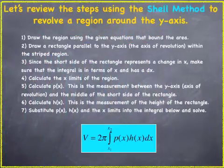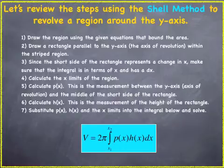So let's just review some of the steps. So in item 1, you want to draw your region using the given equations. Item 2, draw a rectangle parallel to the y-axis or the axis of revolution, whatever that may be. In 3, since the short side of the rectangle represents a change in x, we want to make sure the integral is in terms of x and has a dx. 4, we want to calculate our x limits. 5, calculate p(x). This is the measurement between the y-axis, or I should say the axis of revolution. It doesn't have to be the y-axis. And the middle of the short side of the rectangle. 6, calculate h(x). This is the measurement of the height of our rectangle. 7, substitute p(x), h(x) and x limits into our integral below. And then you solve.